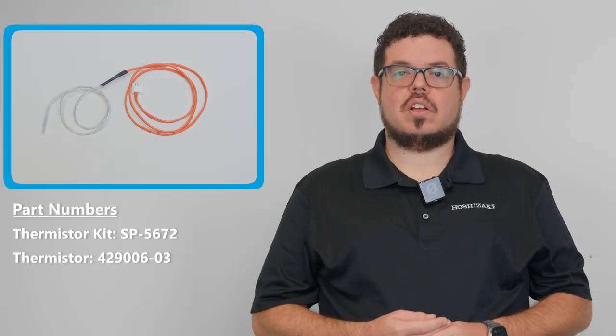Lastly, we're going to install the new thermistor, but before we do so, we want to make sure to remove the thermistor holder from the copper tube and any and all excess heat compound residue. You can use Scotch-Brite or sandpaper to clean the surface.